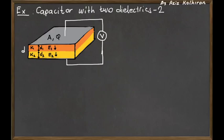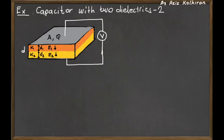Remember, for a parallel plate capacitor, the electric field is just σ divided by ε₀ between the plates, where σ is the surface charge density of one of the plates — just q divided by A. If you place a dielectric material between the plates, the electric field is modified to σ divided by (k1 · ε₀). So the electric field will be smaller than in vacuum by a factor of k1. For the other material, the electric field is expressed as σ divided by (k2 · ε₀).